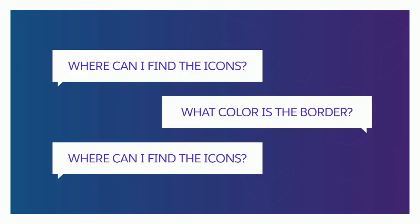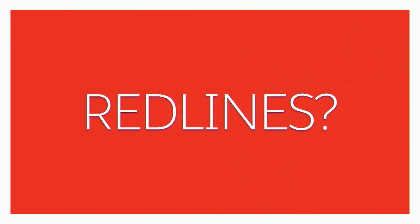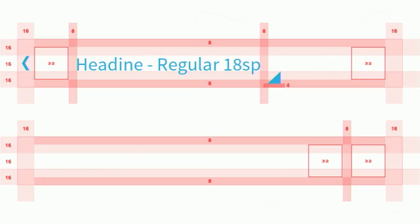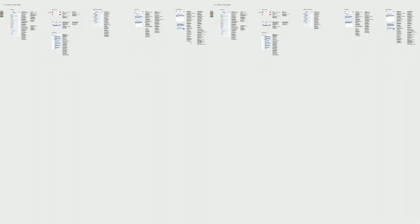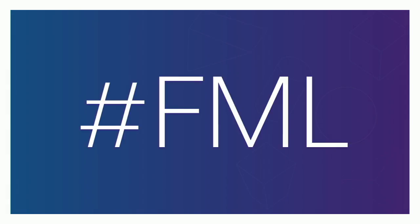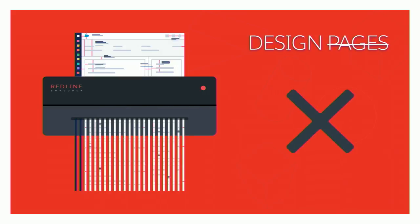One common method people have used is what's known as a red line — basically a specification where you're speccing out the spacing, type, and font sizes. I did one many years ago for an Android application. You can think of it as a blueprint for your UI, and when you're working at enterprise scale it's not very fun, because designing red line specifications is a very outdated workflow. You're basically thinking about pages, and today it's not about designing pages — it should be about designing systems.